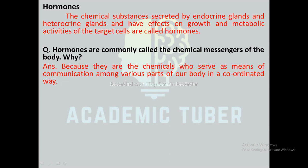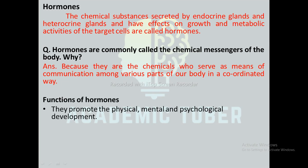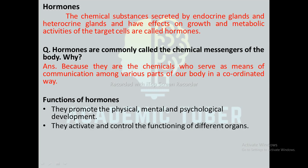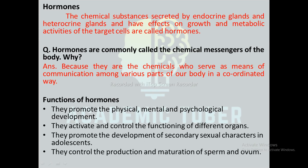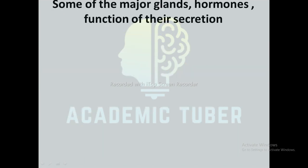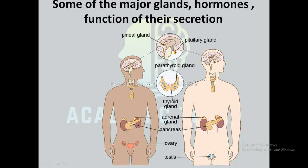Functions of hormones: they promote physical, mental, and psychological development; they activate and control the functioning of different organs; they promote the development of secondary sexual characters in adolescence; and they control the production and maturation of sperm and ovum. Here is a diagram showing the endocrine glands in the human body.